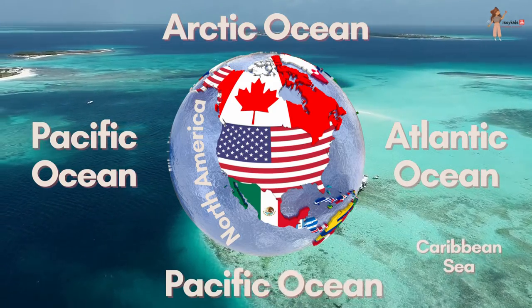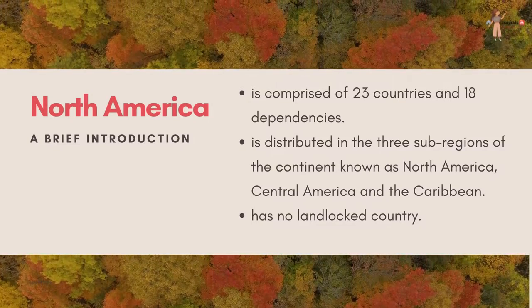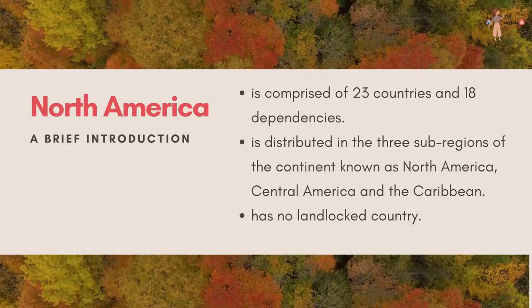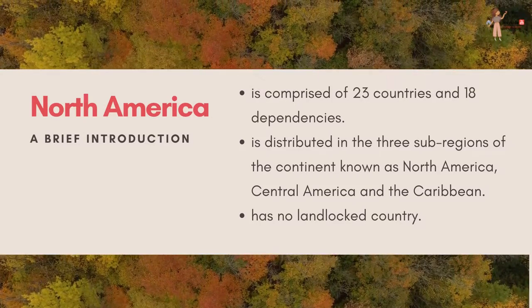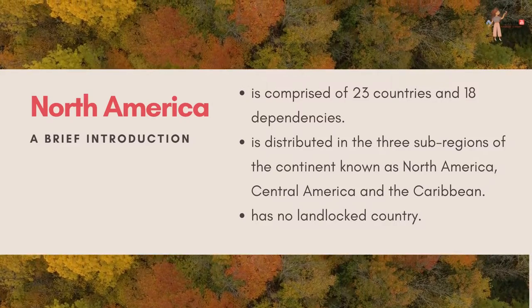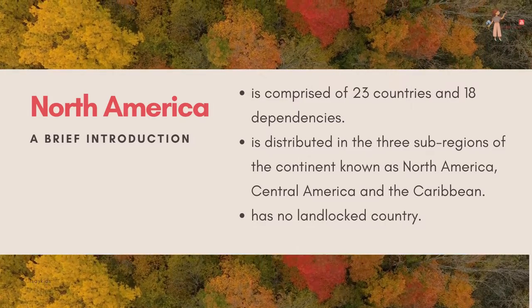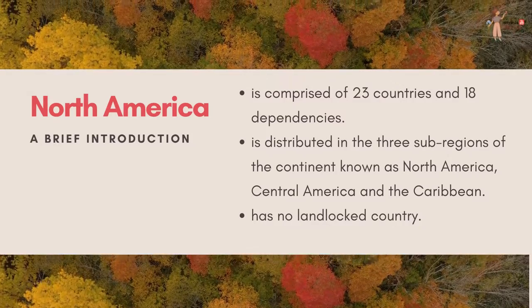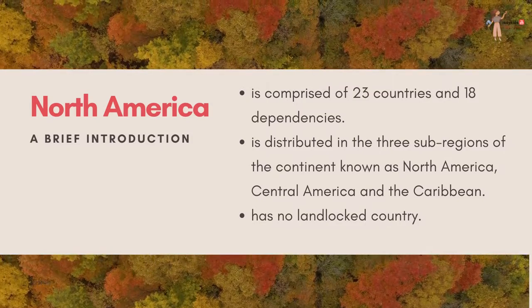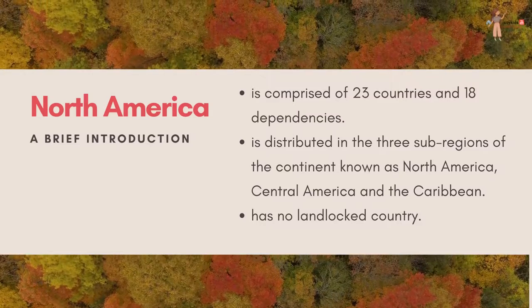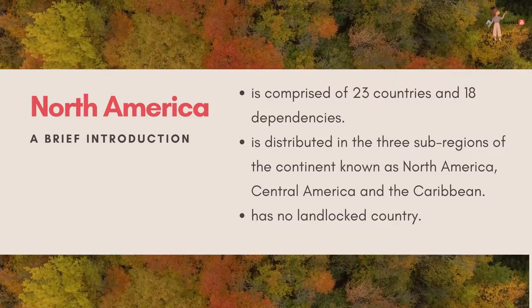North America is comprised of 23 countries and 18 dependencies. A dependent territory, sometimes referred to as an overseas territory, is a territory that does not possess full political independence as a sovereign state. It is distributed in three sub-regions of the continent, known as North America, Central America, and the Caribbean. North America has no landlocked country.